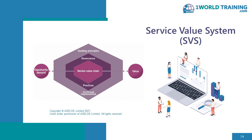At the very highest level, this is an image that shows everything you need to do to deliver IT service management, to deliver valuable services, to work with your customers to co-create value in the form of products and services. Some of these things we've already looked at and some we'll be looking at later. Outside of the Service Value System, you can see opportunity and demand coming in and value being created coming out.